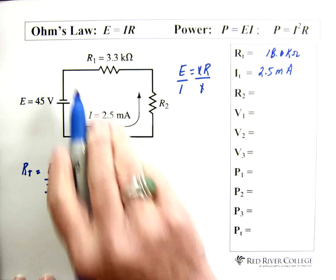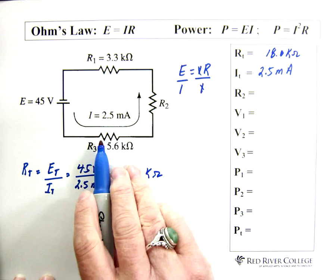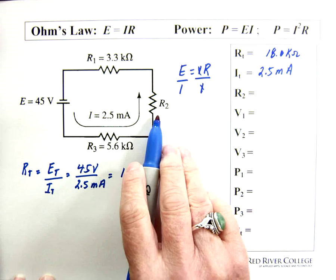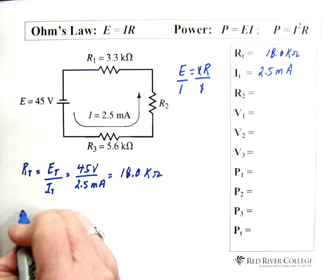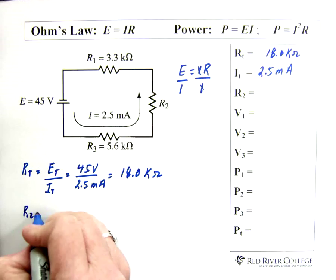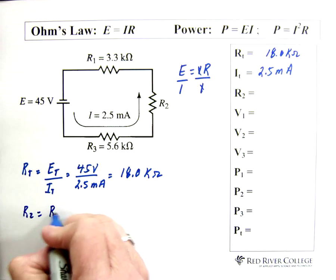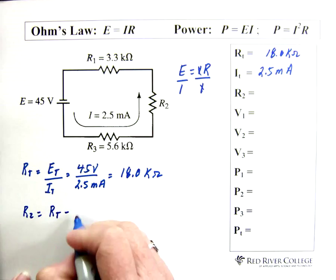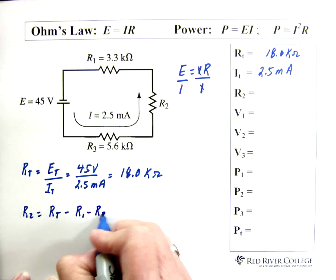Now, since you've found the total resistance, you can find R2. So then we can say R2 equals R total minus R1 minus R3. We'll just subtract those two other resistors, right?